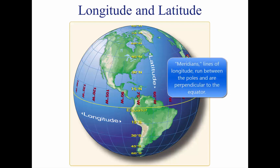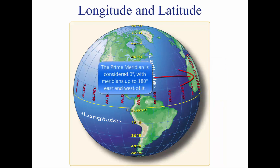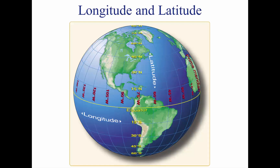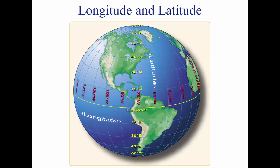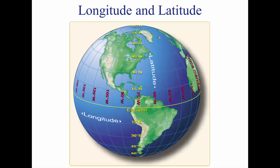Meridians of longitude are drawn from the North Pole to the South Pole and are at right angles to the equator. The prime meridian, which passes through Greenwich, England, is used as the zero line from which measurements are made in degrees east and west to 180 degrees. The 48 conterminous states of the United States are between 67 degrees and 125 degrees west longitude. The arrows in this figure labeled longitude point to lines of longitude. Any specific geographical point can be located by reference to its longitude and latitude. Washington DC, for example, is approximately 39 degrees north latitude, 77 degrees west longitude.